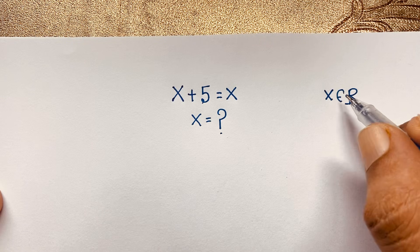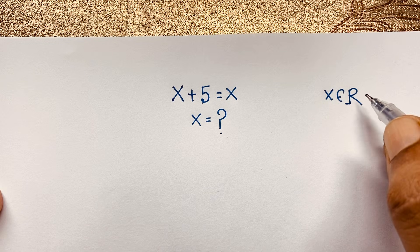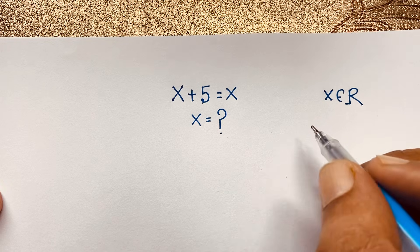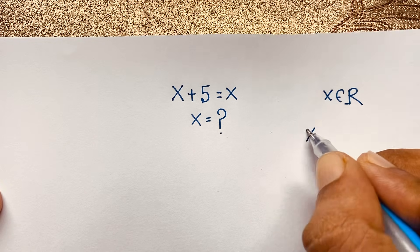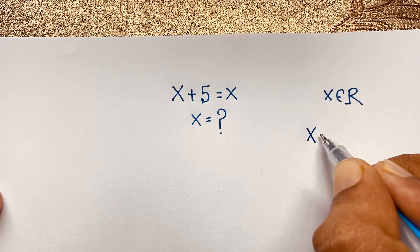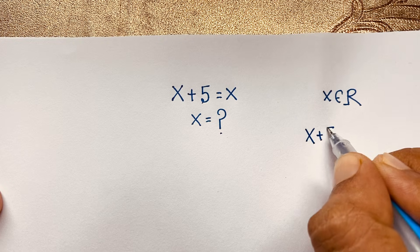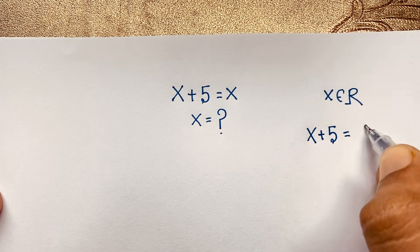Here x is a member of ℝ, where ℝ is the set of real numbers. So how do we solve this interesting math question? Our question is x plus 5 is equal to x.